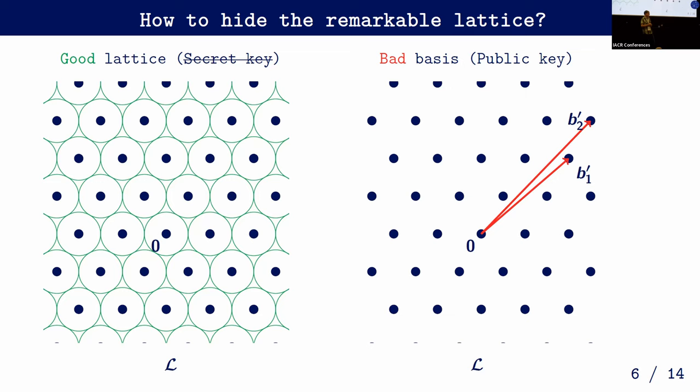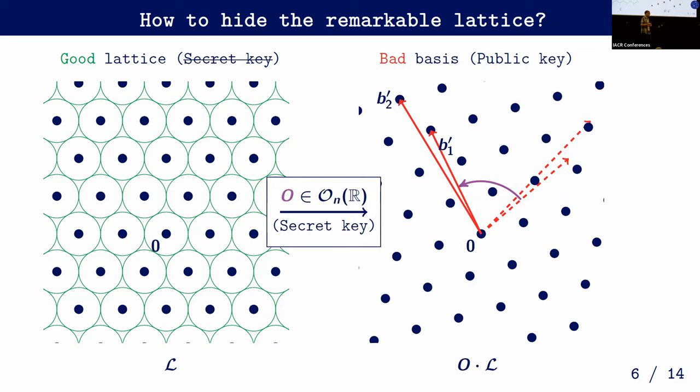For lattices, the full group of isometries is not just permutations of coefficients — you can apply any orthonormal transformation. So what we propose is: pick your good lattice and apply a uniform orthonormal transformation, which basically means you rotate your lattice. To do encryption, you get some message on the right, use this orthonormal transformation — which is secret, your secret key — to move to the good side where you know how to decode, and then move back.